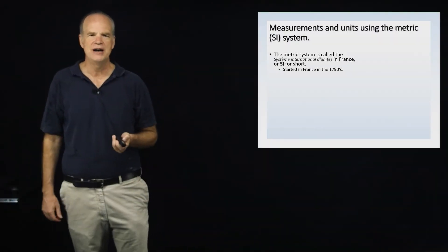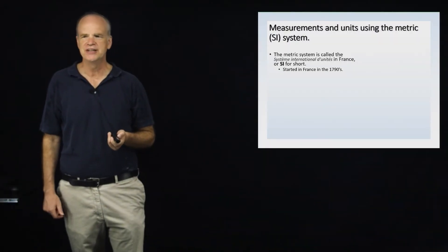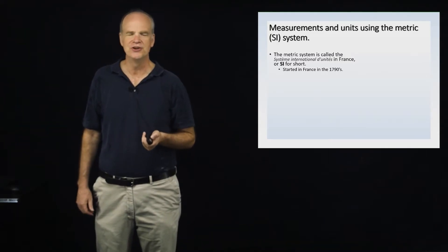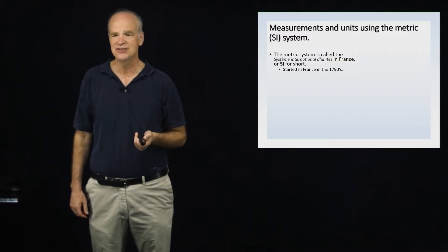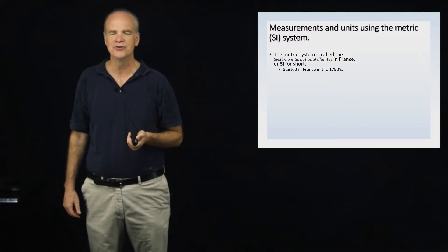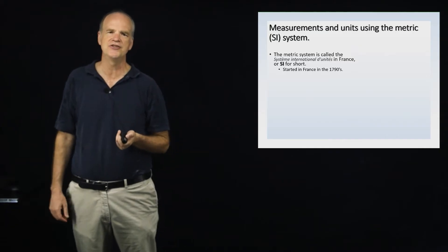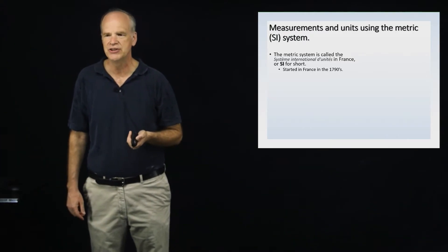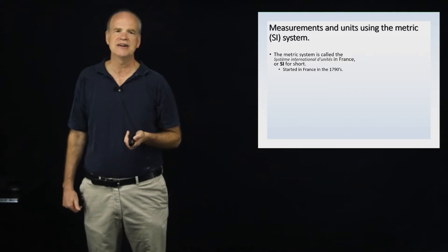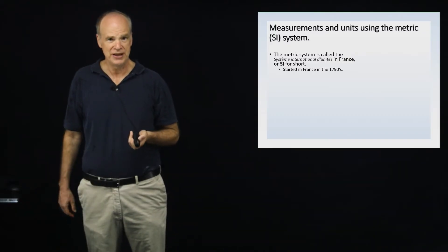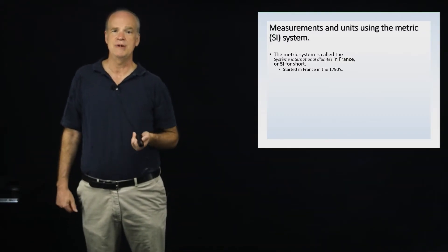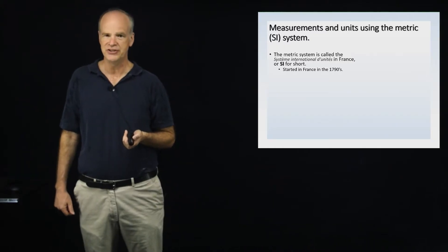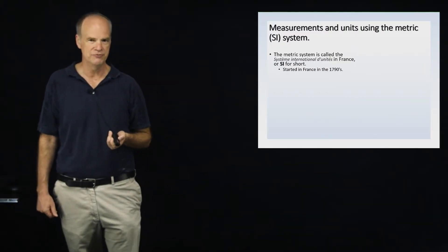Welcome back to chemistry. Today we're going to talk about the metric system, also known as the system international. The metric system was actually devised in France during the French Revolution, around 1790. In fact, one of the major people who developed it, a man named Antoine Lavoisier, was later guillotined, which was very unfortunate.